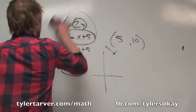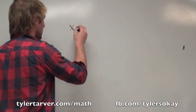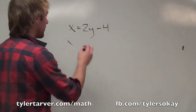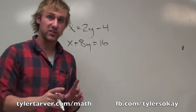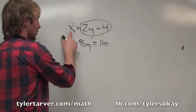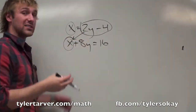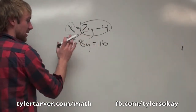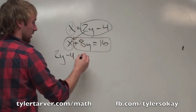Let's do a couple more examples. Let's say we've got x equals 2y minus 4 and x plus 8y equals 16. Once again, my first step is to get any of the x's or y's by themselves. We've already got an x by itself, so we replace that x in the second equation with 2y minus 4, because x has the same value as 2y minus 4. Bring down the rest: plus 8y equals 16.